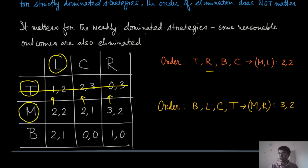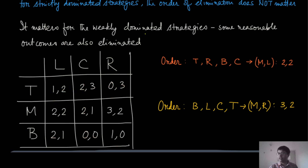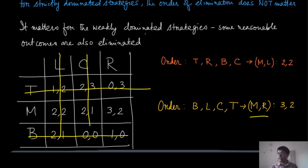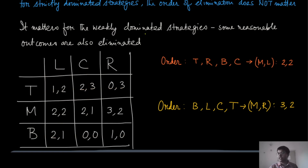Similarly, if you remove the strategies in a different order — remove B first since B is dominated by M, then remove L which is dominated by R in the reduced game, then eliminate C which is also dominated by R, and finally remove T for player one — you end up at M comma R, which gives a different utility for the two players. So the order of elimination determines which game you end up in, and this may differ for weakly dominated strategies.